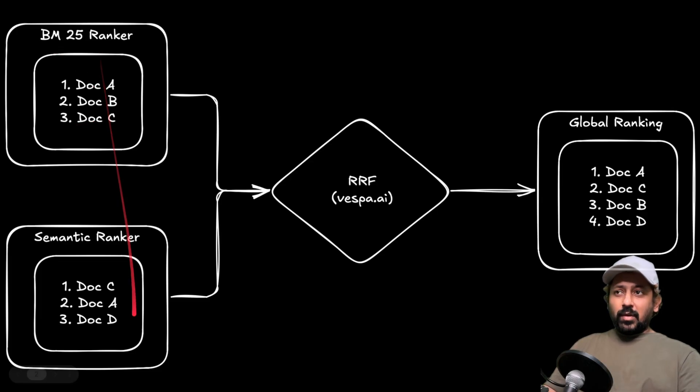So like rank one is doc A, rank two is doc B, rank three is doc C using the BM25, and similarly C, A, and D for the semantic ranker. So for the same query these two ranking functions can give you different results. They can often disagree, and reciprocal rank fusion says if a document ranks high in any of the lists it should get a good overall score.